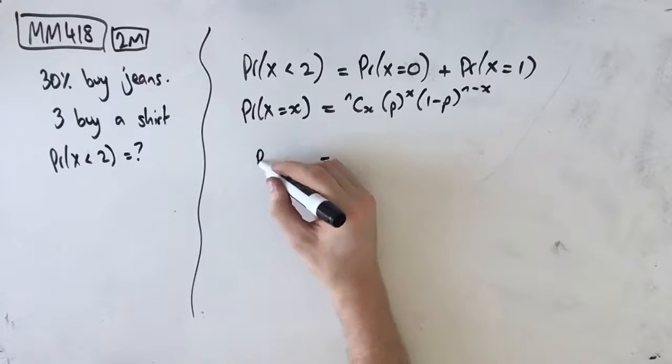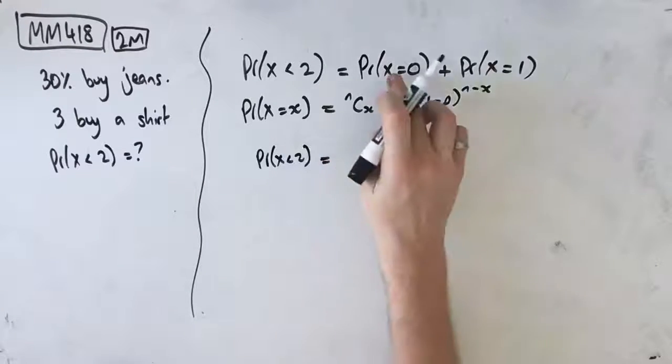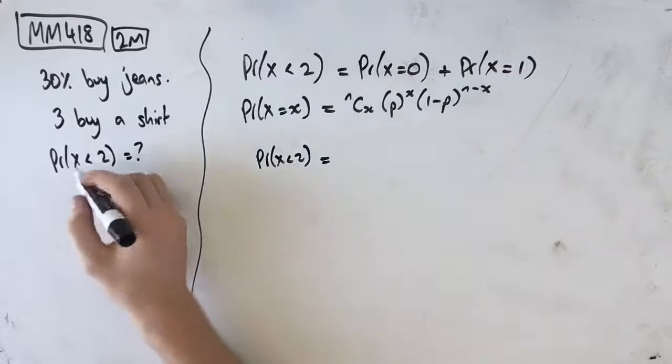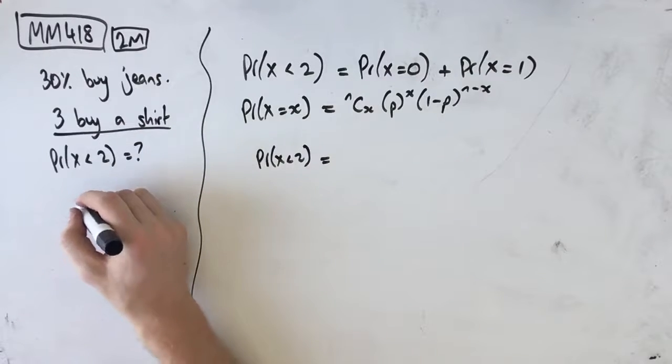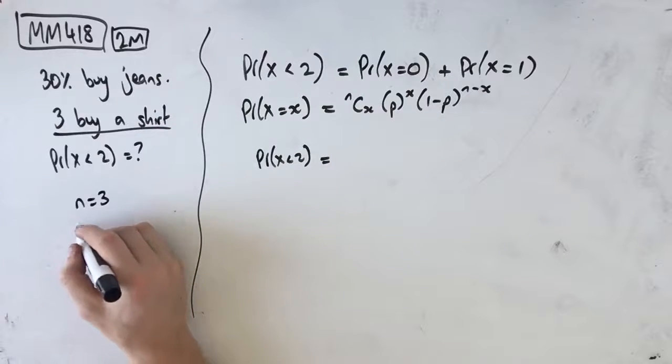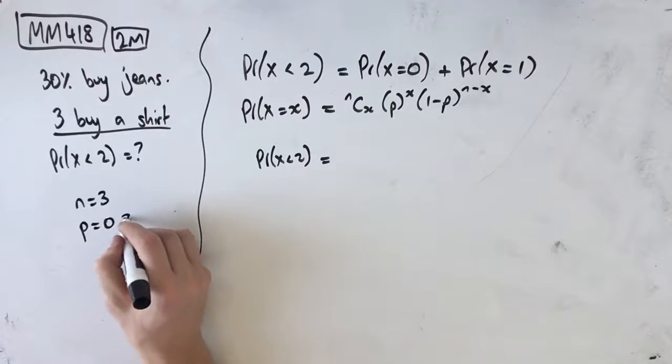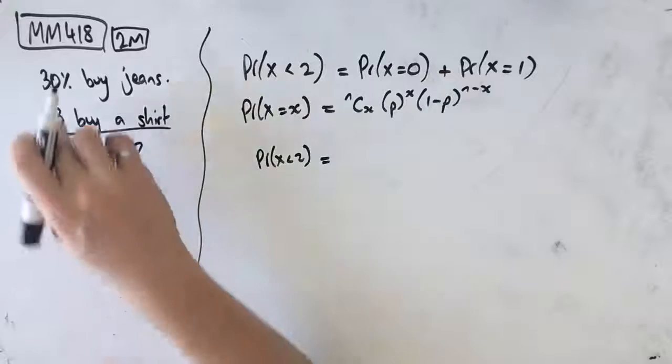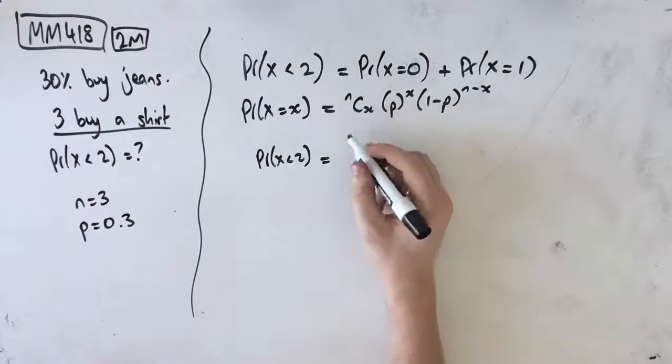So let's start with X equals 0. We know that three people buy a shirt, so our n is 3, and we know that 30% of them buy jeans, which means our probability that they buy jeans is 0.3. So 0.3 is the same as 30%, n is 3.